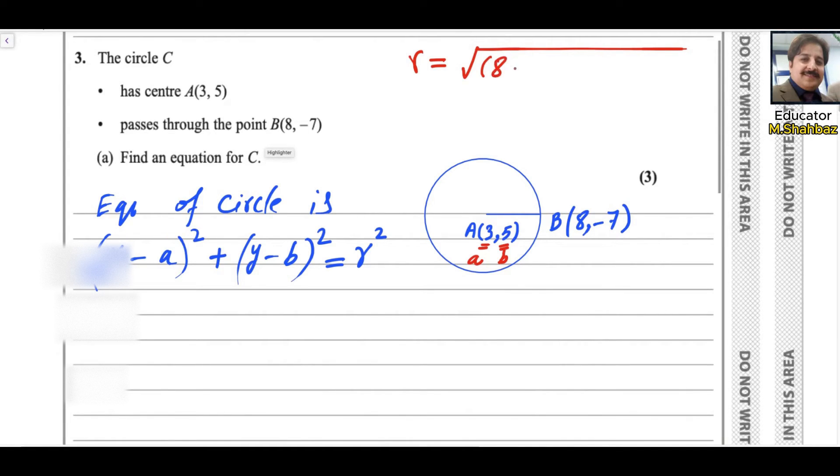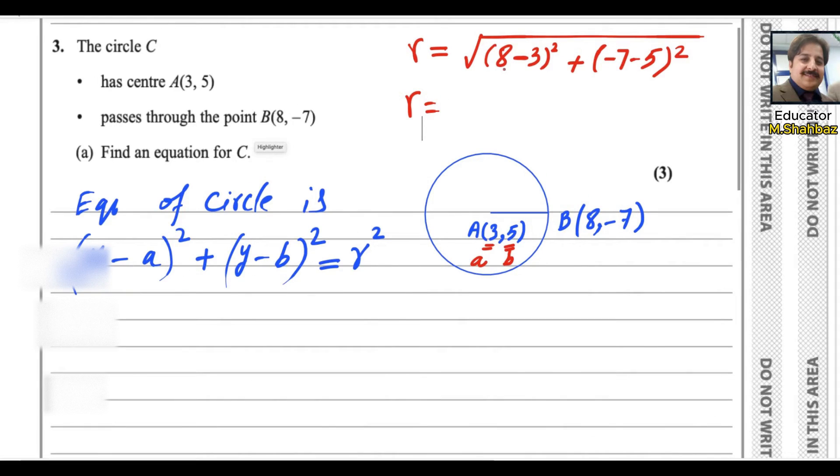So it will be (8-3)² + (-7-(-5))². That's 5², which is 25, plus (-7-(-5)) is -12, and (-12)² is 144, and take the square root. So r equals √169.